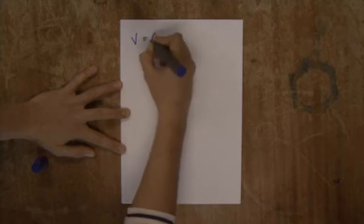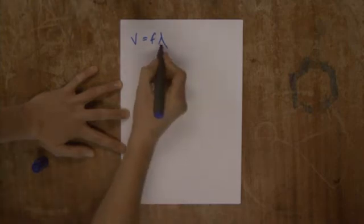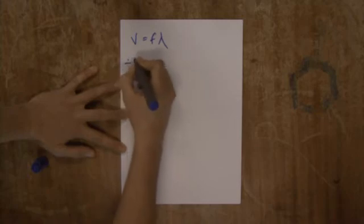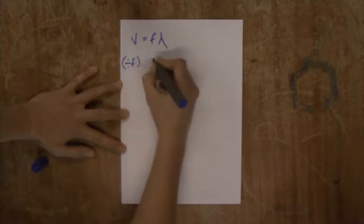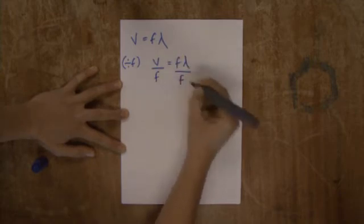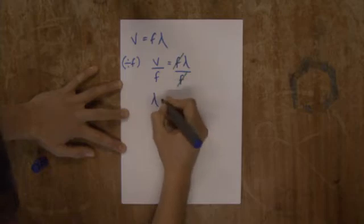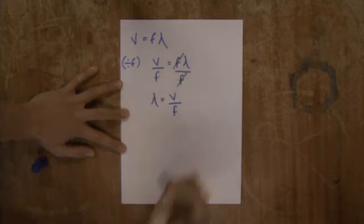Let's look at another example of rearranging equations: the speed of a wave, V, equals frequency multiplied by wavelength. If we want to find the wavelength, we divide both sides by the frequency. We get speed over frequency equals frequency times wavelength over frequency. The frequency terms cancel out, and we're left with wavelength equals speed over frequency.